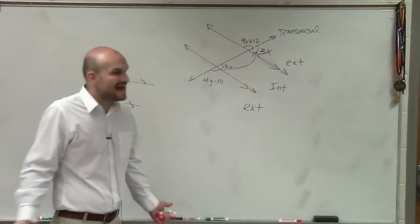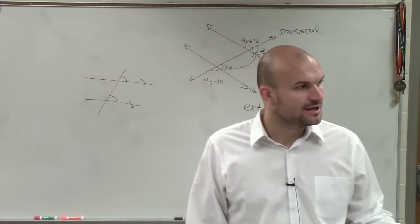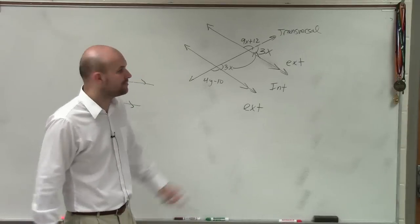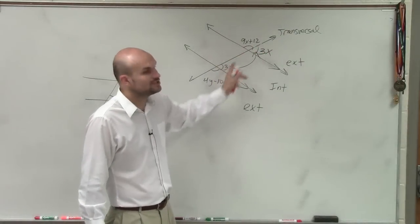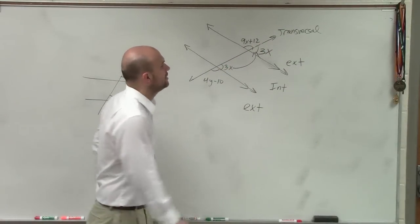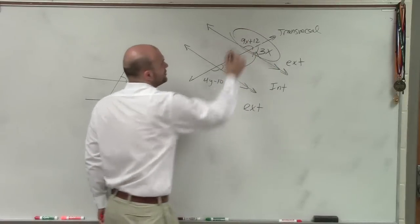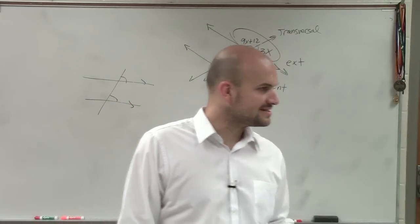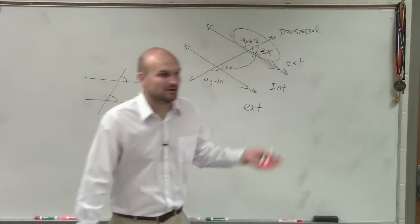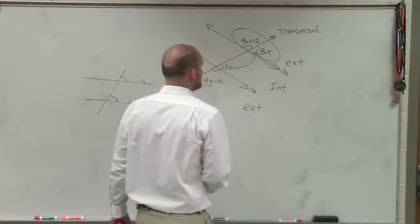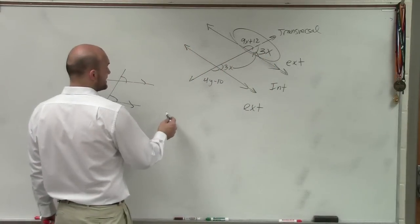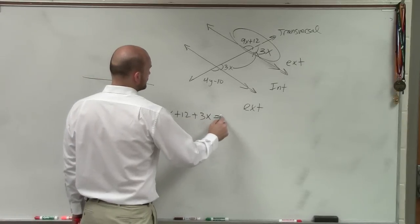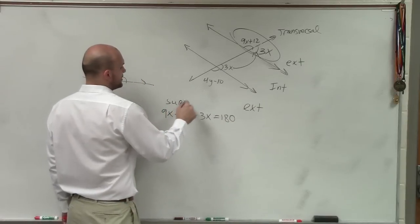So you can say that angle is equal to 3x as well, because you have parallel lines and those two angles are corresponding. Now you have these two angles that share a side and a vertex — therefore we know they're adjacent. And those adjacent angles make up a line, so we know they're supplementary. We call them a linear pair. So therefore I can say now: 9x plus 12 plus 3x equals 180, because those are supplementary angles.